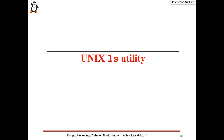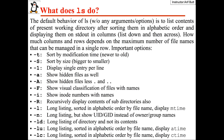Now we know how to read directory contents. Let us move on to designing our own ls utility. The default behavior of ls without any arguments is to list the contents of the present working directory, after sorting them alphabetically, and display them on stdout in columns — listed down then across. How many columns and rows depend on the maximum number of file names that can fit in a single row.